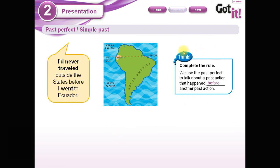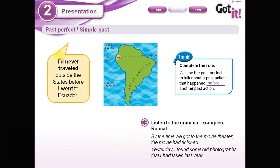So now let's take a look at the rule. The rule says we use the past perfect to talk about a past action that happened before another action. Now let me explain this. It says here: 'I had never traveled outside the states before I went to Ecuador.' So this is previous. Now look at the examples here. It says: 'By the time we got to the movie theater, the movie had finished.'